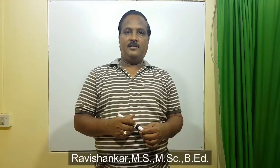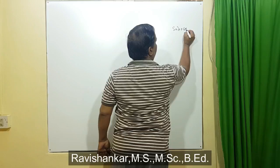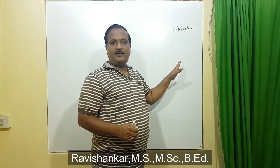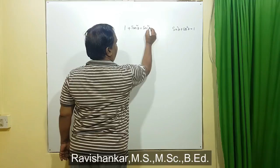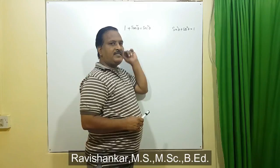Today we are going to learn the second identity: 1 plus tan square theta is equal to secant square theta. We have already learned sin square theta plus cos square theta is equal to 1 — that is the first identity. We proved it by taking a right angle triangle, and in the same way you can prove 1 plus tan square theta is equal to secant square theta.